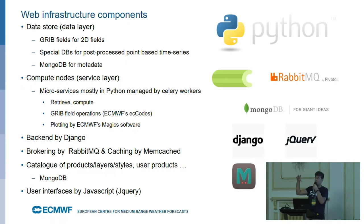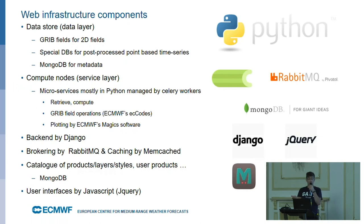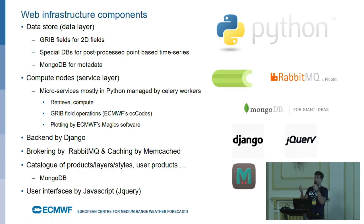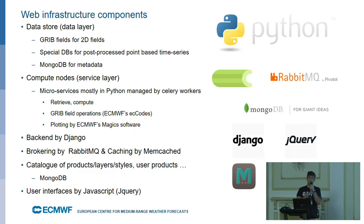We use RabbitMQ to orchestrate all the work, and we use Memcached for caching on the server side. All the metadata needed to generate any layer — let's say the temperature — we keep as JSON files in a database, and we use MongoDB for that. The user interface in the application is JavaScript, mainly jQuery. So looking at our infrastructure, we use all open source software on the server side, which we are very happy about. But our main problem was on the user interface.